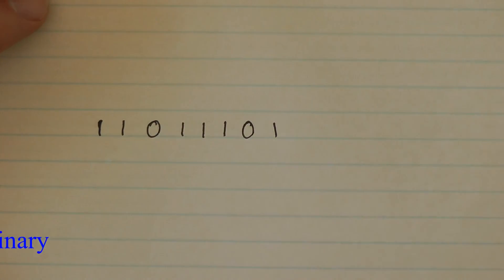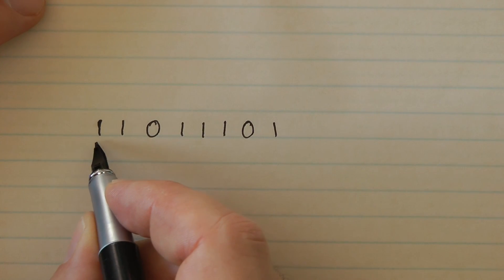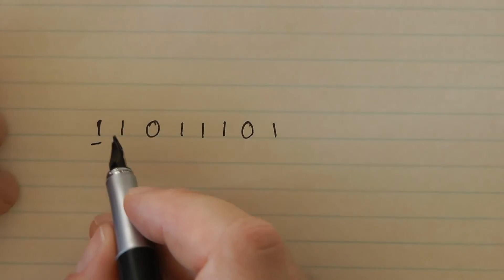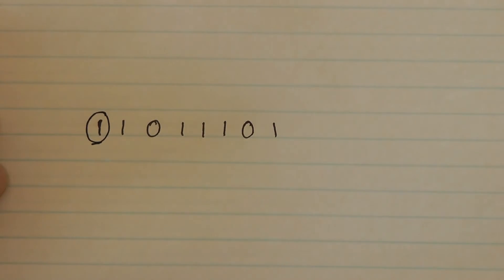So here's an example. This is minus 35. We know it's a minus because it starts with a one. Now in two's complement, if you start with a one, you know it's going to be a negative number.